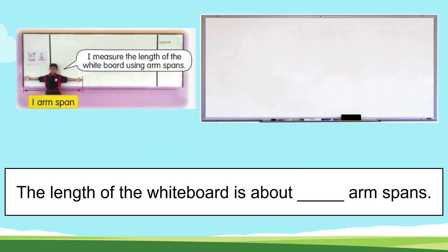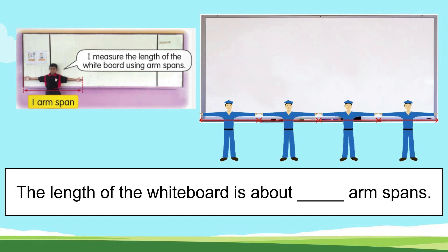Dear pupils, we can also use arm span to measure the length of an object. Here you can see Amir measuring the length of a whiteboard using his arm span. Let's count: one, two, three and four. The length of the whiteboard is about four arm spans.